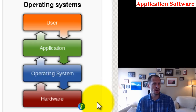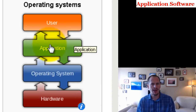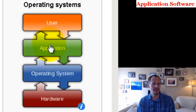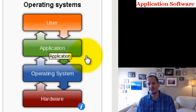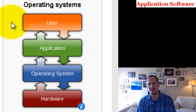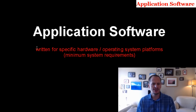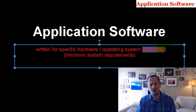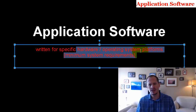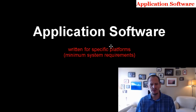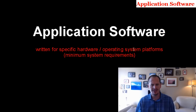So if you buy application software for your Mac and try to install it on your Windows machine, it won't work. If it's written for the Mac, it's got to run on the Mac; if it's written for Windows, it's got to run on Windows. A platform is your hardware and operating system combined. So application software is written for specific platforms — specific hardware and operating system configurations.